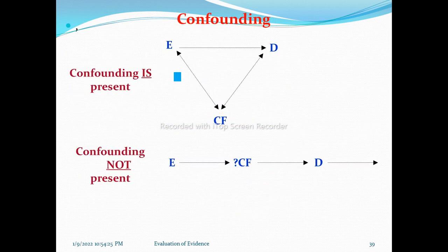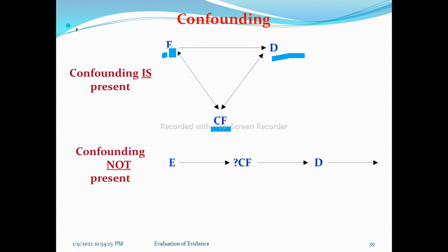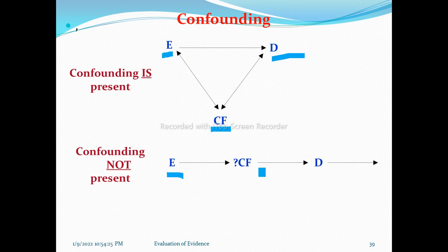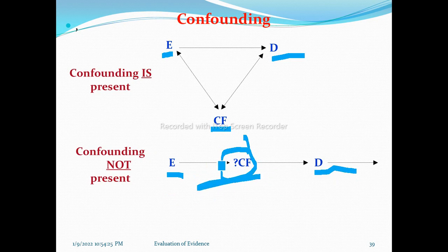When judging confounding: exposure leads to disease, and a confounding factor has a relationship with exposure and, independent of that exposure, also leads to disease — this is a confounding variable. However, if a variable is an intermediate link — meaning exposure leads to that variable, and that variable leads to disease — then it is not a confounding factor; it is an intermediate link.